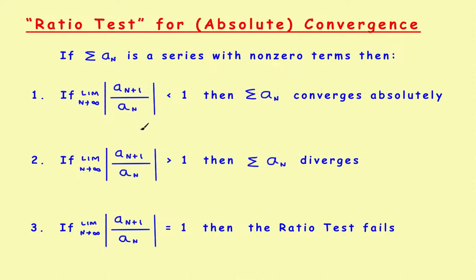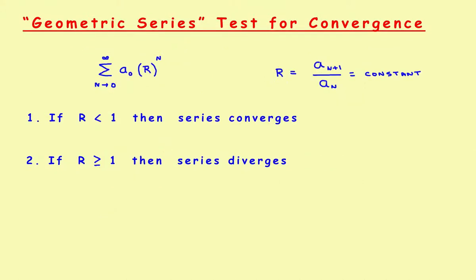Where you've seen a_(n+1) divided by a_n is in the geometric series test — one of the first tests you learn, and an easy one to understand. A reminder: in the geometric series test, the ratio is the ratio of any two consecutive terms, a_(n+1) divided by a_n. In a geometric series, this ratio is a constant. If that ratio is less than one, the series converges; if that ratio is greater than or equal to one, the series diverges.